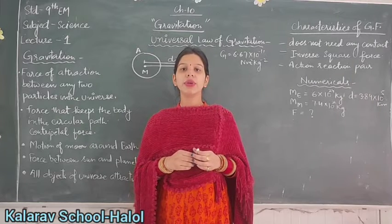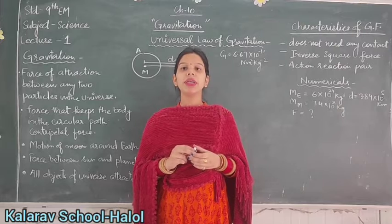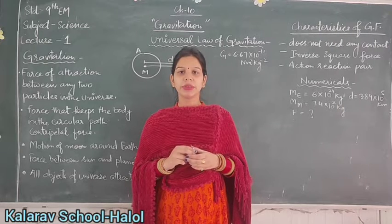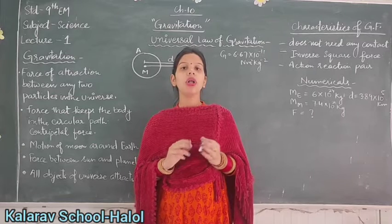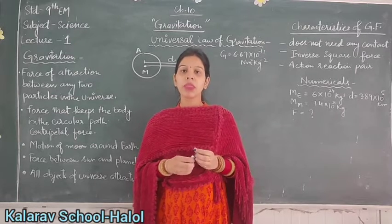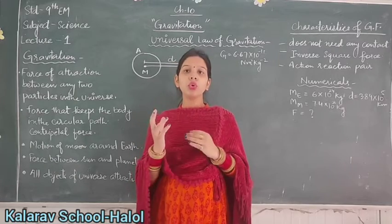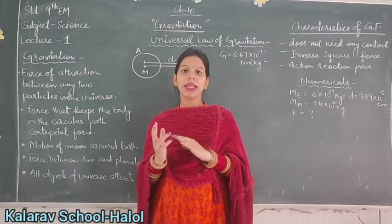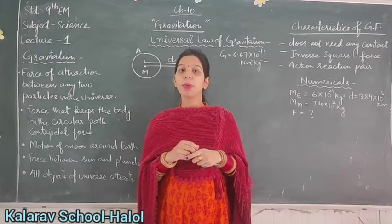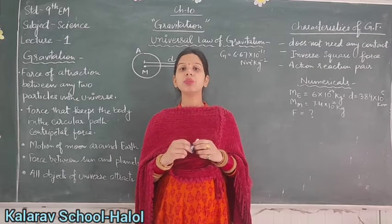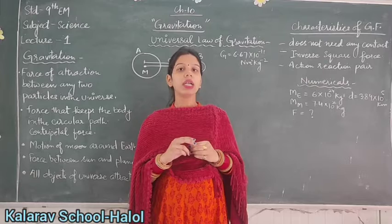Good morning students. Today we will study class 9th chapter 10, that is gravitation. As we know, in our solar system all the planets revolve around the sun. There is a force between the two particles — the sun and the planets — which allows them to revolve around it in a fixed path. That fixed path in which the planets revolve is called orbit.